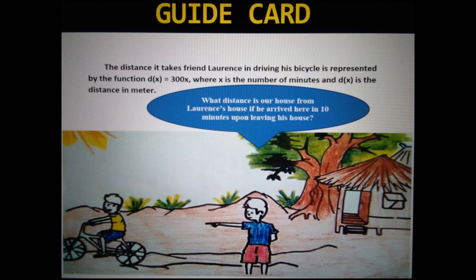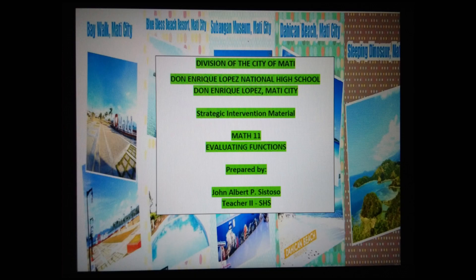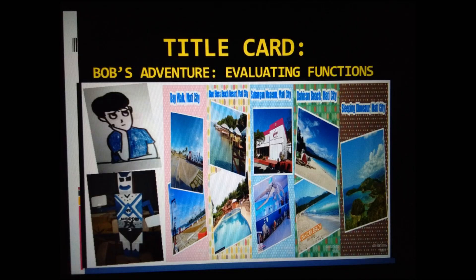In this video, I am going to show you an example of strategic intervention material that I made for my grade 11 low-performing students to easily understand the lesson, particularly evaluating functions. This lesson is one of the least learned competencies for the general mathematics subject. The title of this strategic intervention material is Buggs' Adventure: Evaluating Functions.